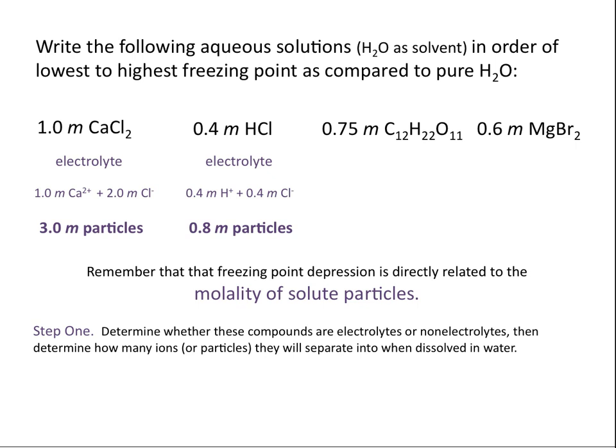Moving on to the third example, we have sucrose. You should recognize that this formula is made entirely of nonmetals, so it's almost always a molecular compound and will not be an electrolyte. This compound will dissolve in water but will not ionize at all — all the carbon, hydrogen, and oxygen atoms stay bonded together and do not separate into separate ions. So this solution has a concentration of 0.7 molal particles.